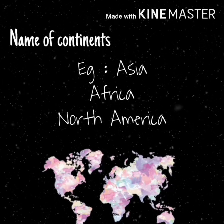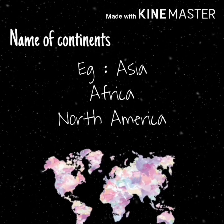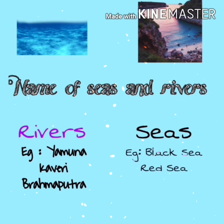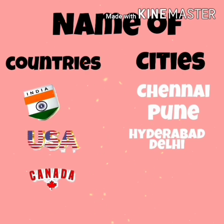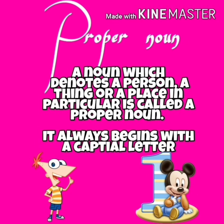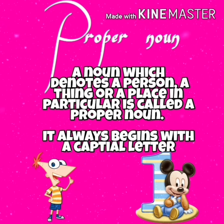Names of continents: Asia, Africa, North America. Names of seas and rivers. Names of countries and cities. A proper noun is a noun which denotes a particular person, thing, or place. It always begins with a capital letter.